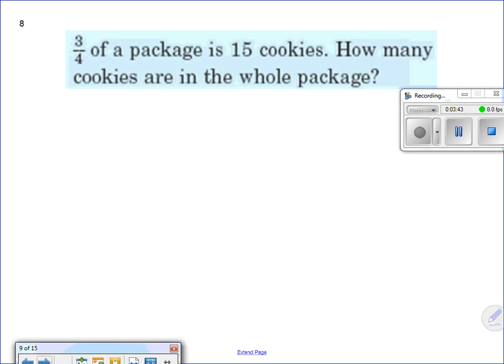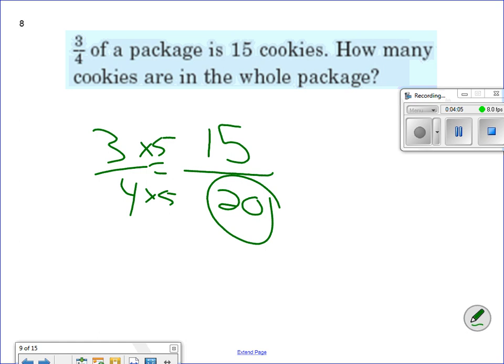3 fourths of a package is 15 cookies. How many cookies are in the whole package? So 15 cookies is not the whole package. So if we know it's not the whole package, we know that 15 is my numerator. So 15 is my numerator. That means I have to do 3 fourths into 15. We're going times 5, which gives me 20. My whole package is 20 cookies.